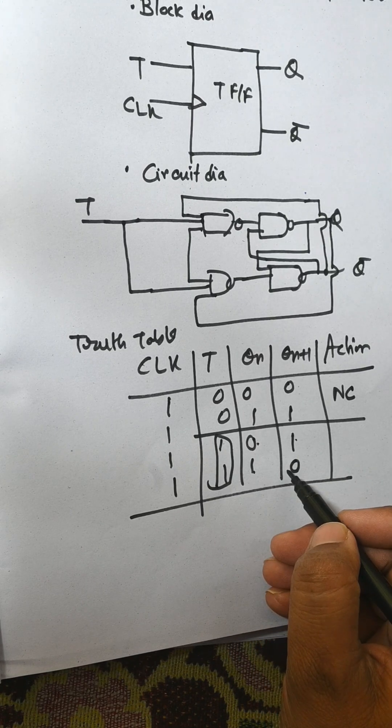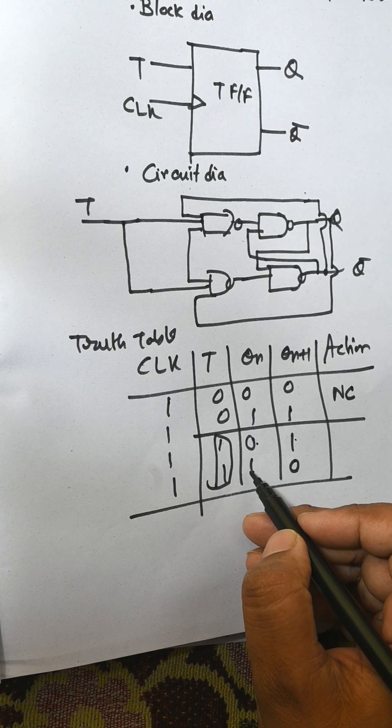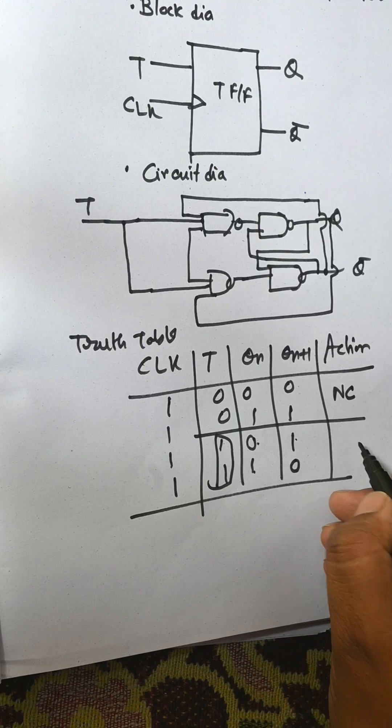This means 0 goes to 1 and 1 goes to 0. At any moment, 0 transfers to 1 and 1 transfers to 0. This is known as toggle.